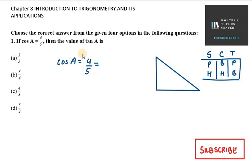How do we write cos A? We write B over H. This means my base is 4x and my H is 5x. You need to take any variable here with respect to the number given to you. So 4x is base and hypotenuse is 5x. That means I need to find perpendicular.